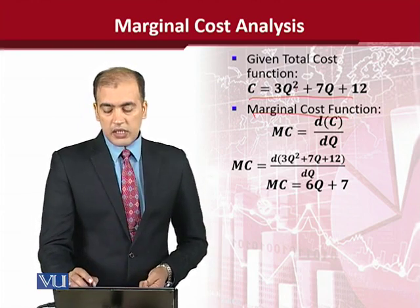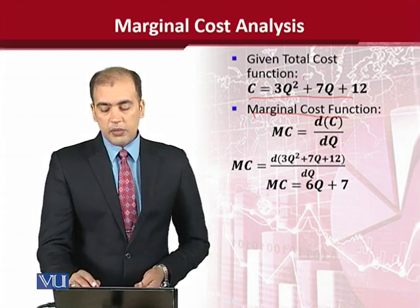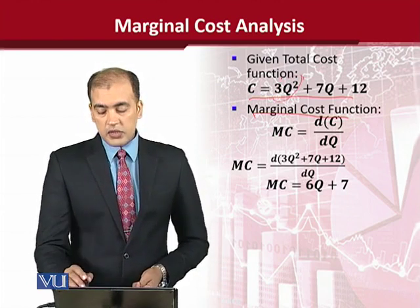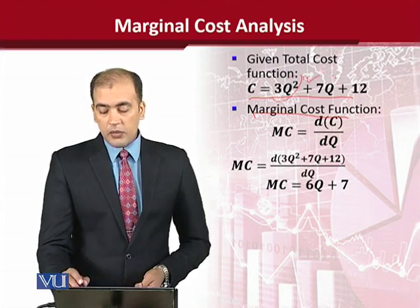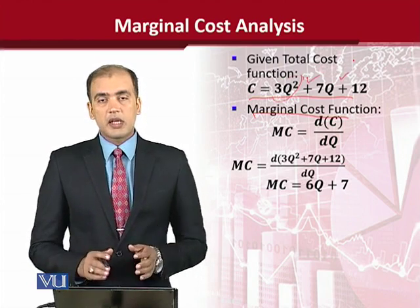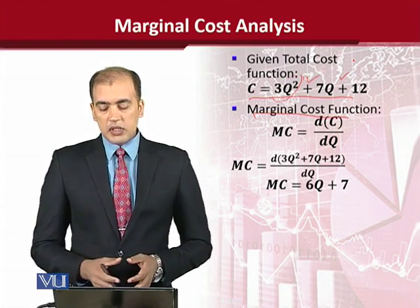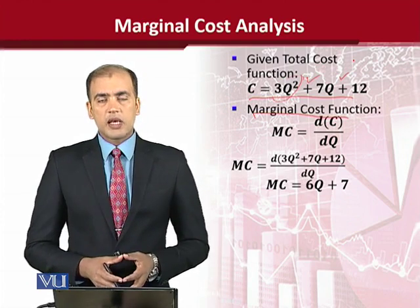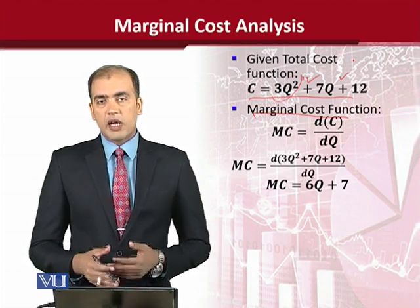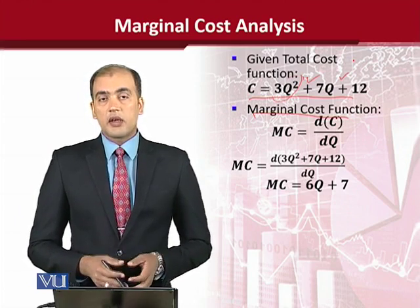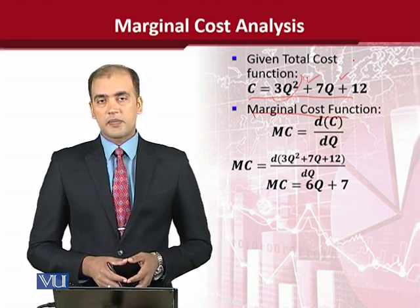Here you can see that the power rule can be applied because we are having a power which is not 1. Uske ilawa yahan par sum rule bhi apply ho raha hai, because aap dekh rahe hain plus ka sign between terms. So using these rules that we have studied in previous lectures, we can find the derivative of the total cost function to find out the marginal cost function.